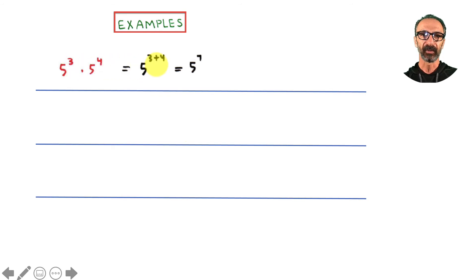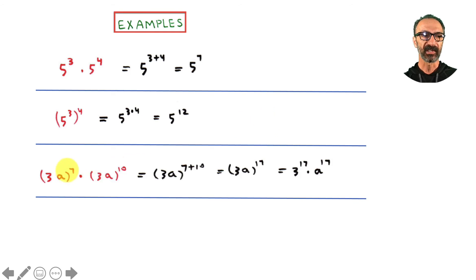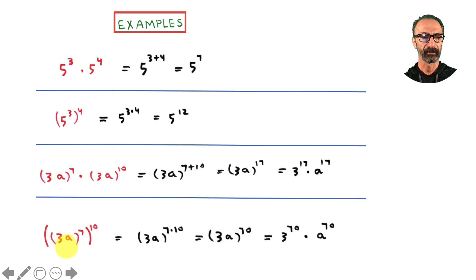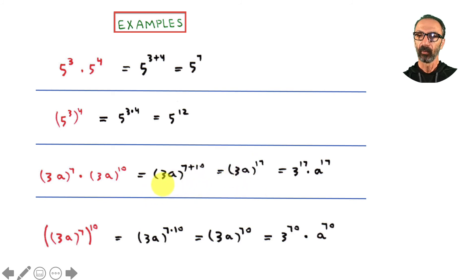Let's do some combined exponent rule examples. First: add the exponents, three plus four which is seven, then multiply the exponents. Seven has to apply to both factors — since we have 3a and 3a, add the exponents 7 and 10 which is 17, then apply the 17 to both 3 and a. For the power of a power: 7 times 10 gives 70, then apply the 70 to both 3 and a, just like we applied 17 before.